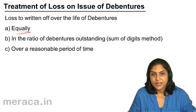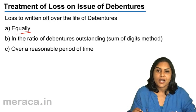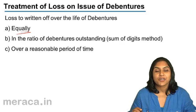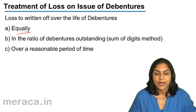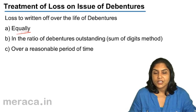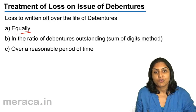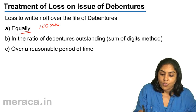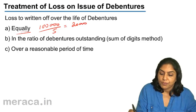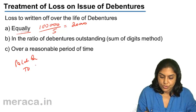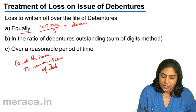One method is to write it off equally. Suppose a company has issued debentures for 50 lakhs and these are redeemable after five years, so the entire 50 lakhs will be repaid after five years. If there was a discount or loss on issue of debentures, it would be written off over a period of five years equally. Suppose the amount of discount was 1 lakh — 1 lakh divided by 5 — so 20,000 would be written off to profit and loss account every year.